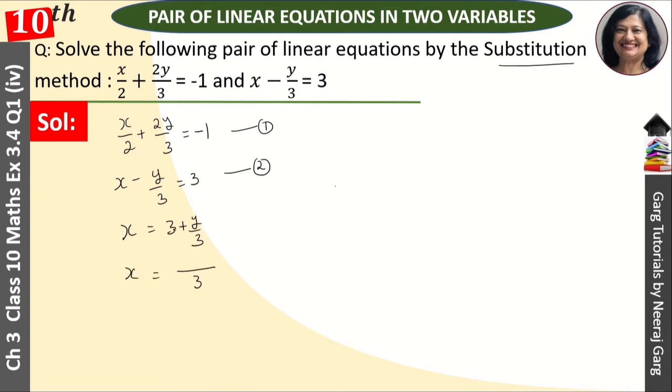Taking LCM, 3 into 3 equals 9. So x = (9 + y)/3, this is our third equation and we will put this value in the first equation.